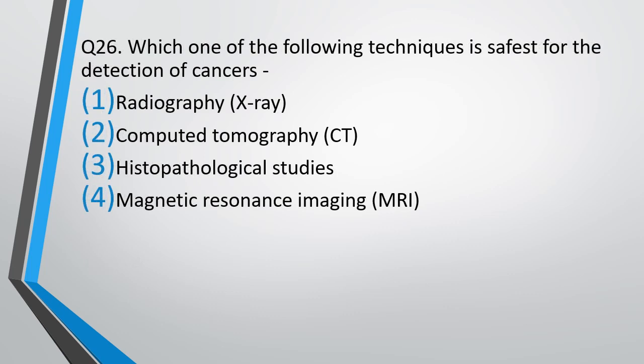Question number 26. Which one of the following techniques is safest for detection of cancers? Radiography, computed tomography, histopathological study, or magnetic resonance imaging. Safest. The correct answer is option 4 — magnetic resonance imaging.